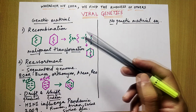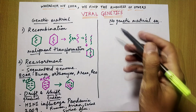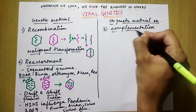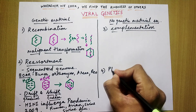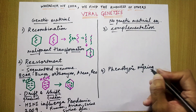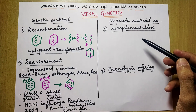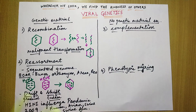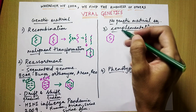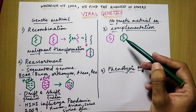Now we will learn all the processes in which there is no exchange of genetic material. The two main processes here are: first, complementation, and second, phenotypic mixing. In complementation — I call this a true friendship — what happens is that there is one virus and there is another virus. The second virus is completely non-functional and defective, while the first virus is functional.